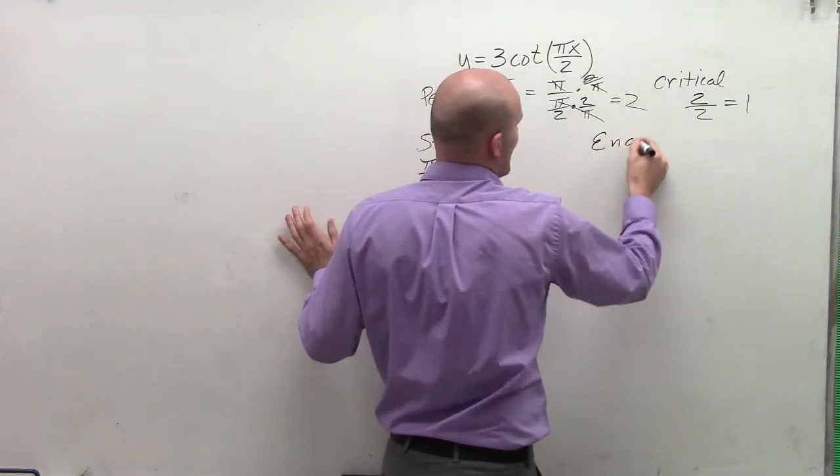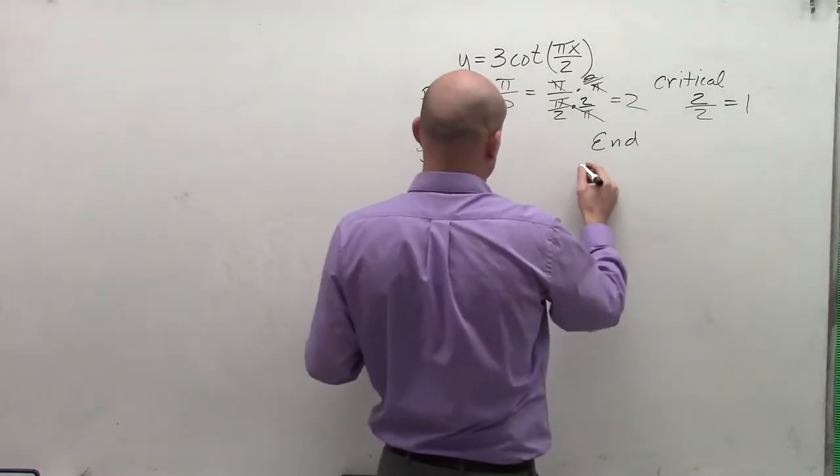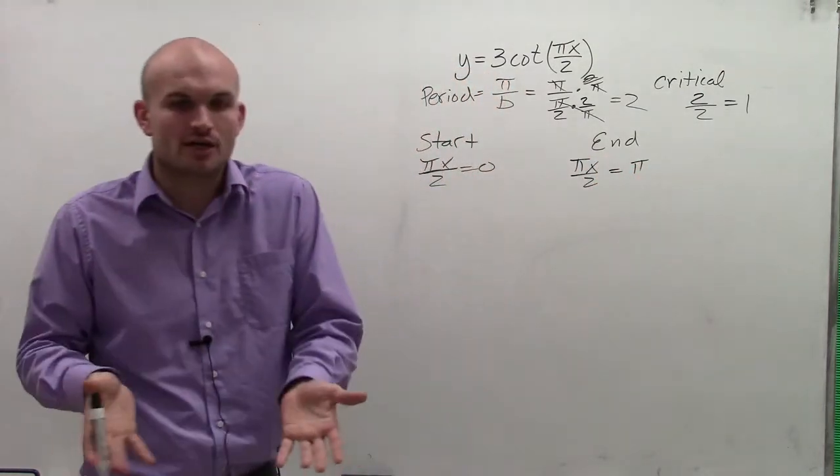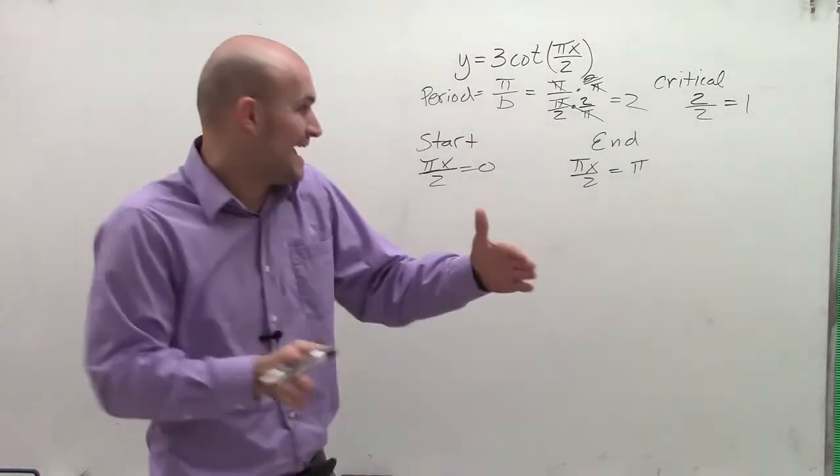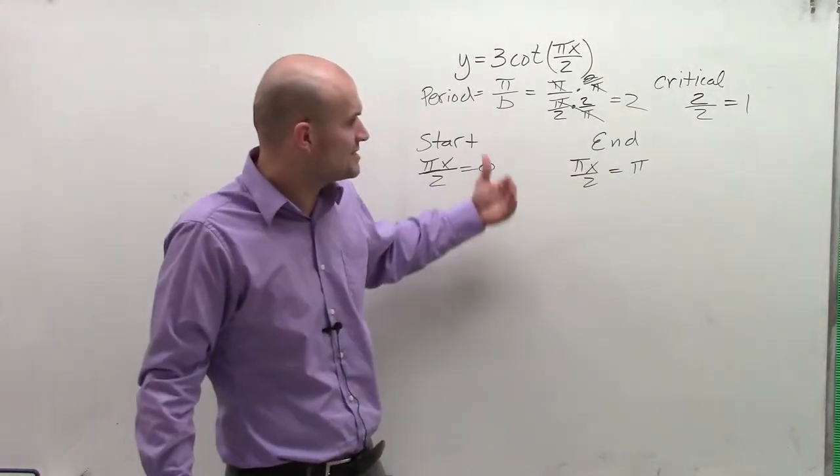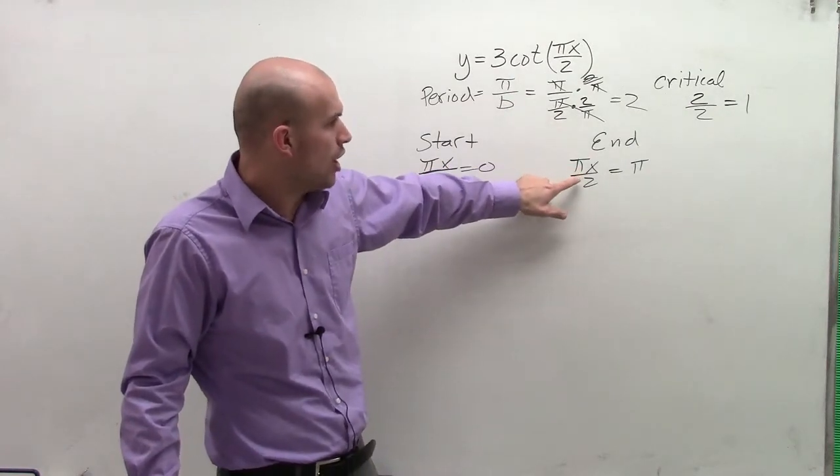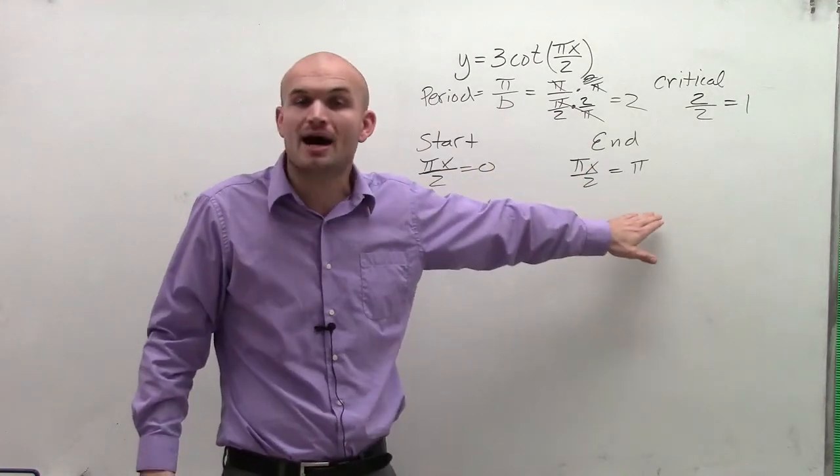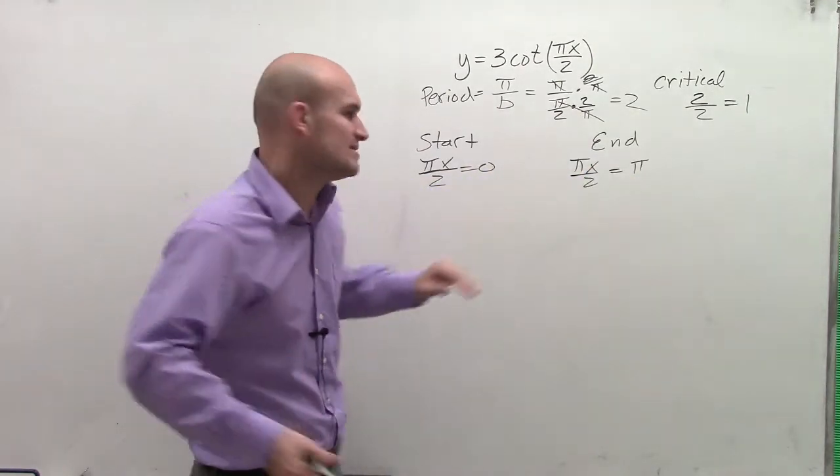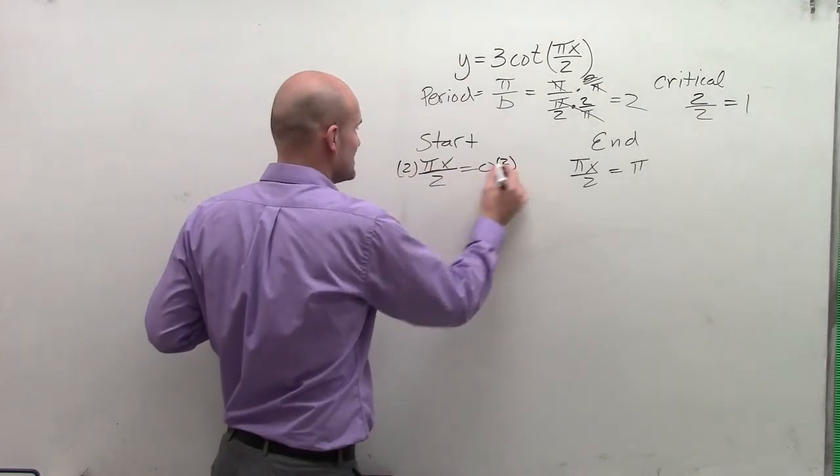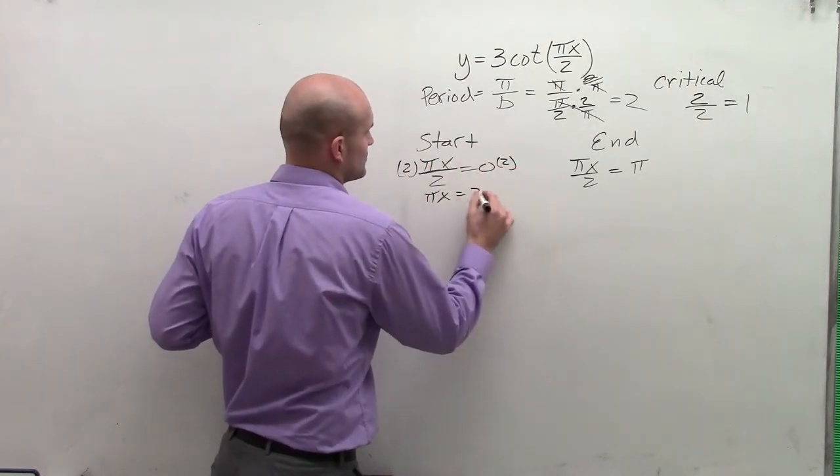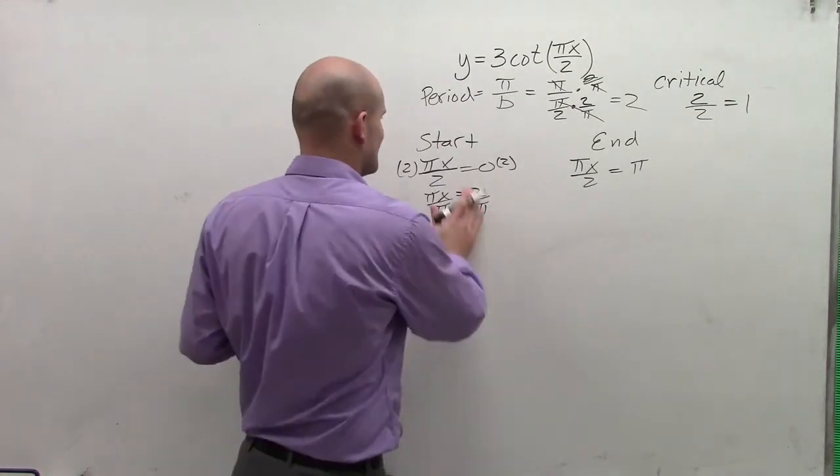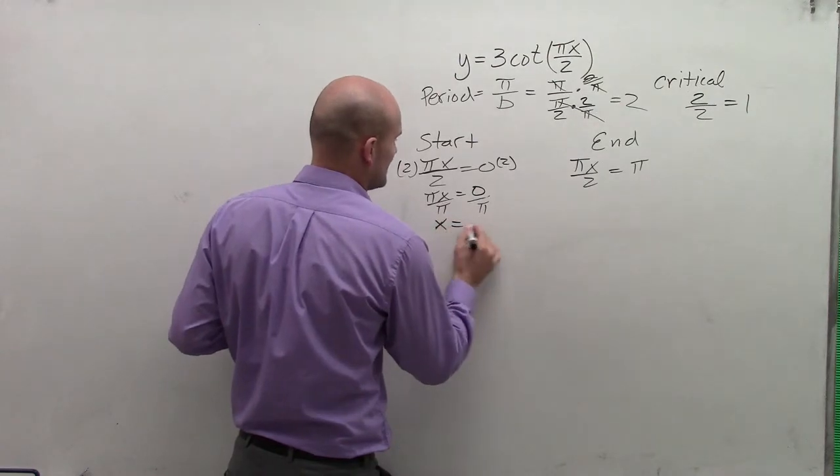The initial graph ends at pi, so I have pi x divided by 2 equals pi. If you look at the parent graph, the initial period starts at 0 and ends at pi. To see how our function is going to be altered by our transformations, we set it equal to 0 and pi from our initial period, then solve for x. We multiply by 2 on both sides. Then pi x equals 0 divided by pi, so x equals 0.